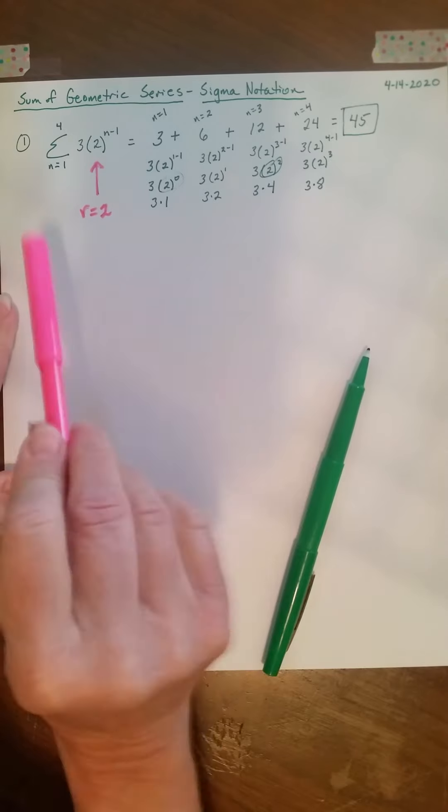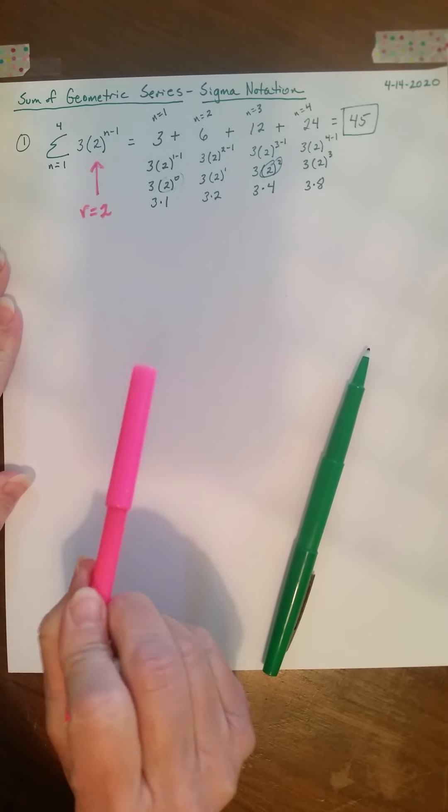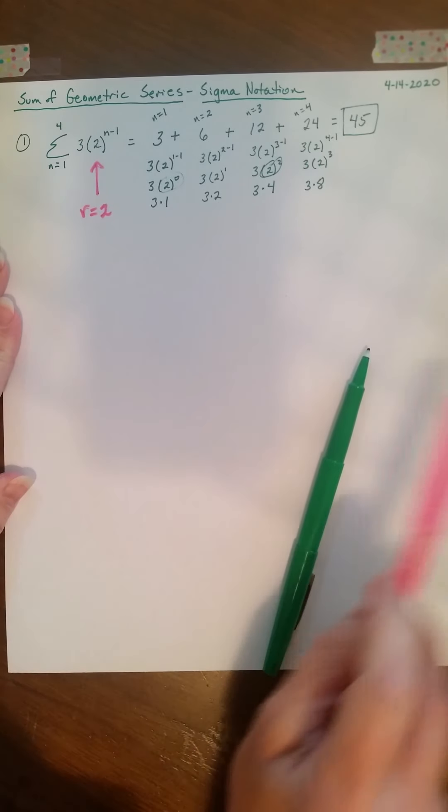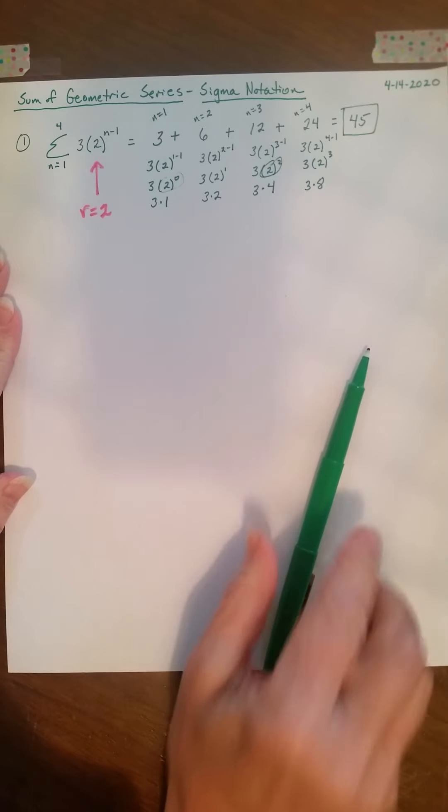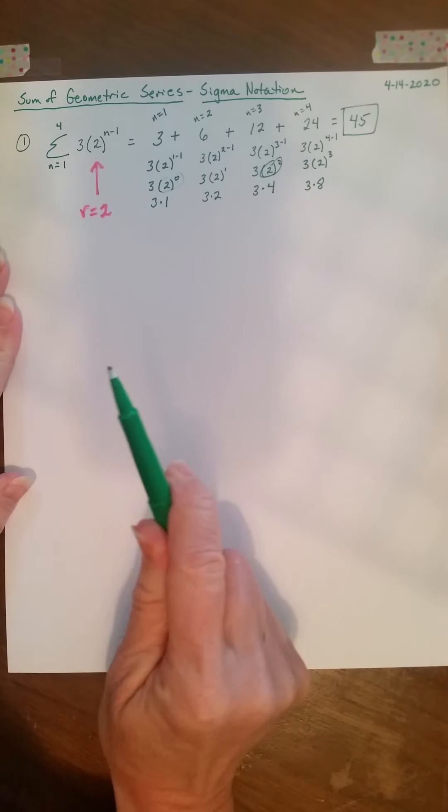We have a common ratio of r equals 2. And notice that in parentheses, we have a 2 right there. Okay, now, keeping this in mind, this is going to help us find the sum of larger geometric series, larger than 4 terms.